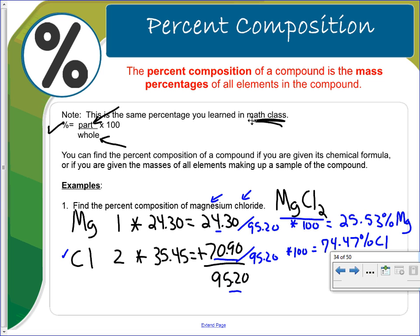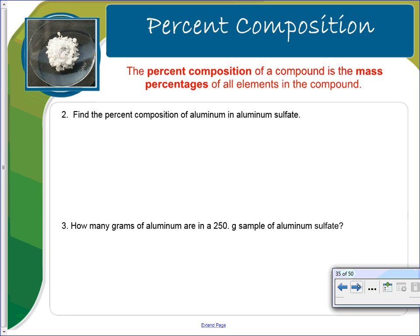There's different ways you can show this work, but you do have to show all the work. Find the percent composition of aluminum in aluminum sulfate. So we have to make sure we can write the formula correctly. Aluminum sulfate is Al. Sulfate has a negative two charge and aluminum has a three charge. So this is what it looks like. But we just want the percent composition of aluminum in there.